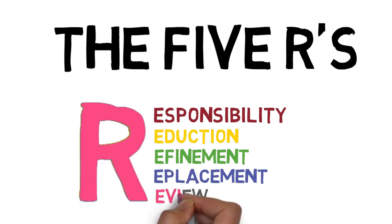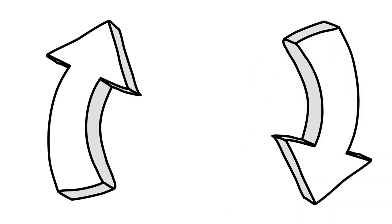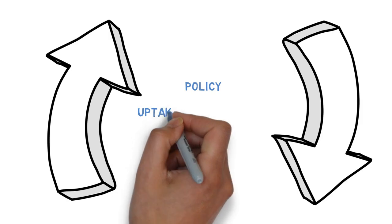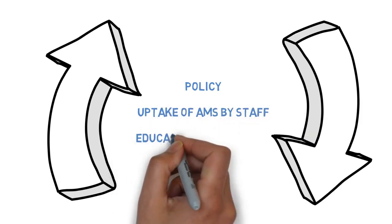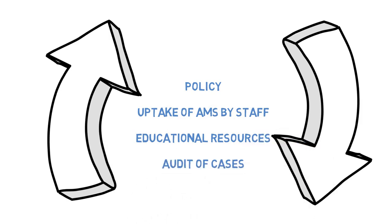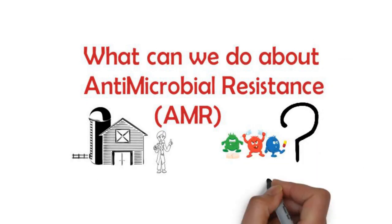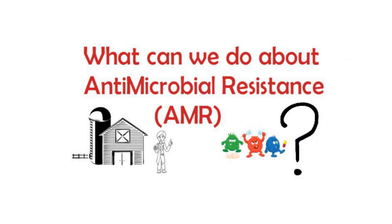And finally, review. This refers to the regular review and improvement of any and all antimicrobial stewardship initiatives. This can be done through periodic review of practice-specific policy, uptake of stewardship best practice by staff, educational resources for staff and clients, and an audit of number and type of cases with antimicrobial resistance since the last review. That brings this module to a close. We have gone some way to answering the question of what we can do about antimicrobial resistance, by looking at control measures already in use to reduce antibiotic use in animals and outlining the 5 R's approach to antimicrobial stewardship. Many of the concepts covered in this module will be covered in greater depth in other modules within this course.